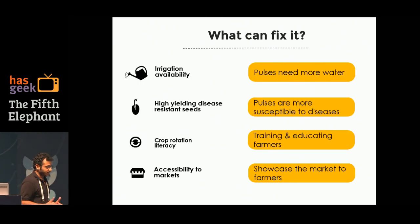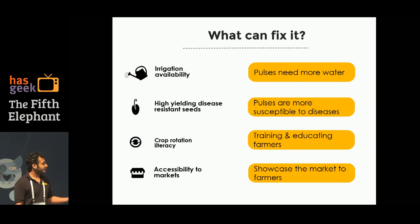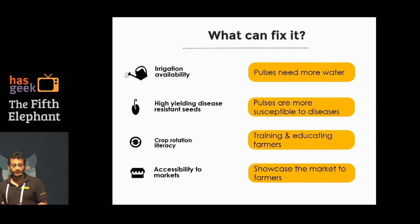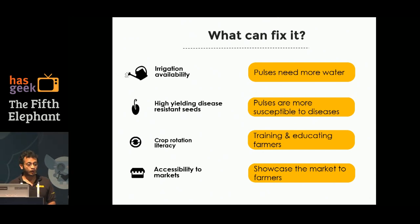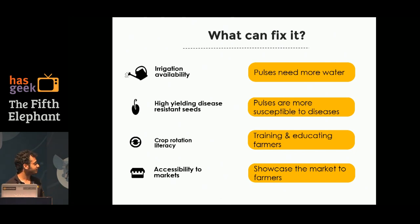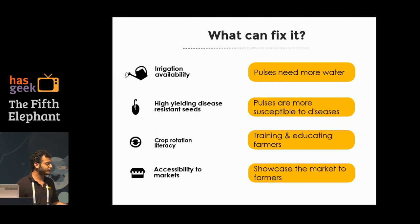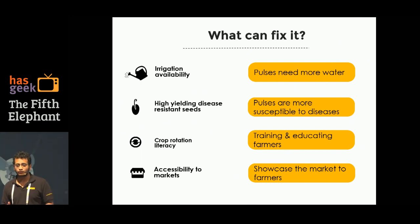How would a government or philanthropic organization solve this pulse problem? They would typically invest in areas that increase the productivity of pulses — areas like availability of irrigation, high-yielding disease-resistant seeds since pulses are disease-prone crops, crop rotation literacy so farmers know they can grow pulses between rice and maize season, and accessibility to markets so farmers can sell what they grow. These are the typical areas any organization would want to target to solve the pulse problem in India.